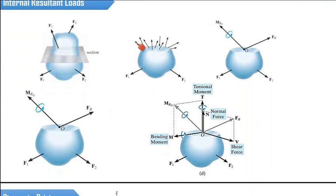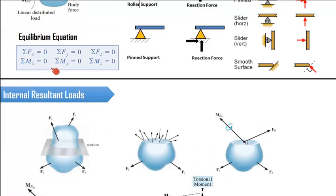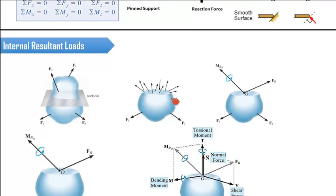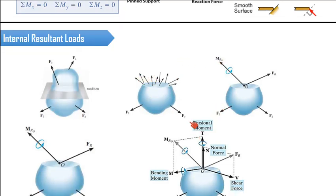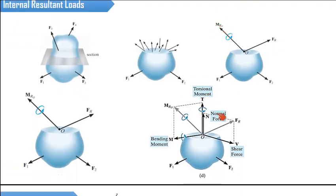Using the fundamental principles, by summing forces in the x, y, and z directions and taking the resultant, we can convert this system of forces into a single resultant force. The entire moment effect of all these forces is summed into the resultant moment. When we resolve this resultant load and moment into three mutually perpendicular axes, we have a shear force, a normal force, a bending moment, and a torsional moment.